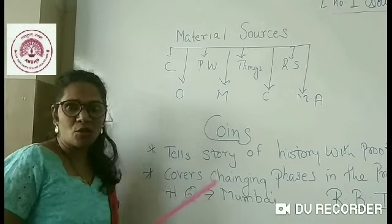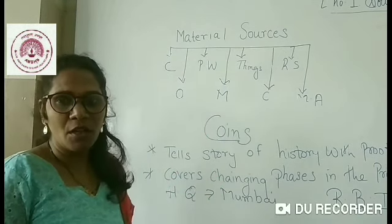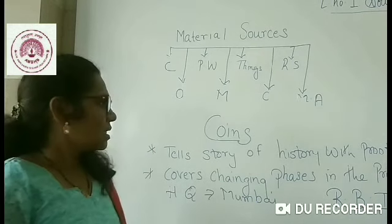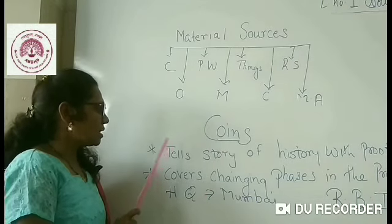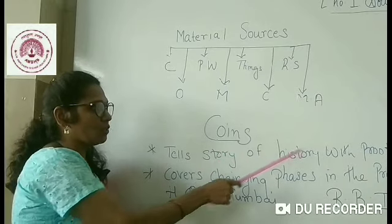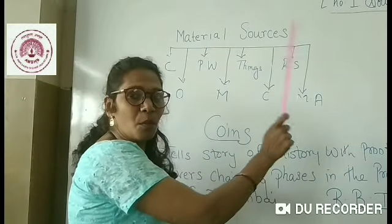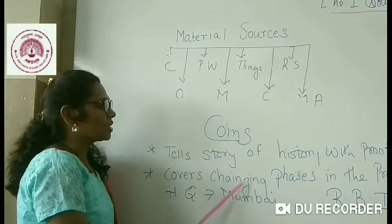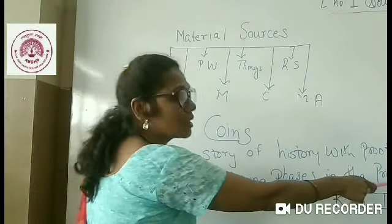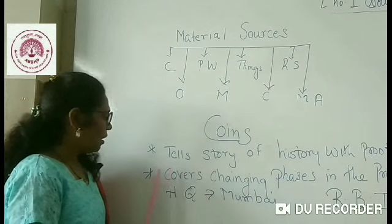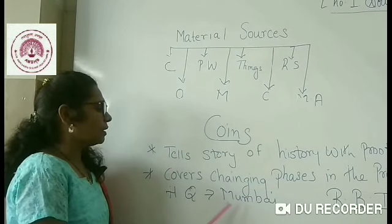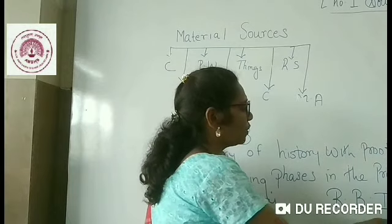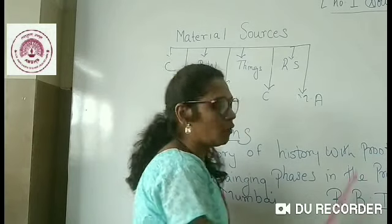Coins are of different types — we have coins made of steel metal. Coins tell the story of history with proof of the past and present. They cover the changing phases in the printing of currency notes. The headquarters is in Mumbai, and we have printing notes served by the Reserve Bank of India.